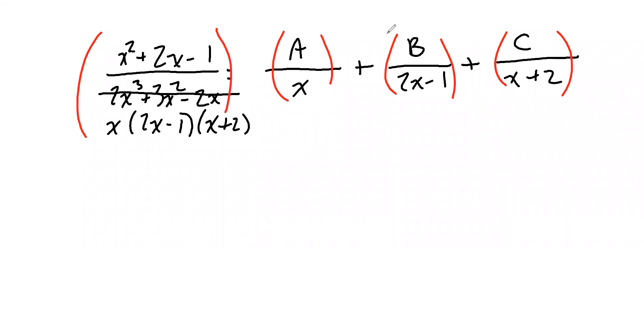X times 2X minus 1 times X plus 2, on each side. X, 2X minus 1, X plus 2. X, 2X minus 1, X plus 2.